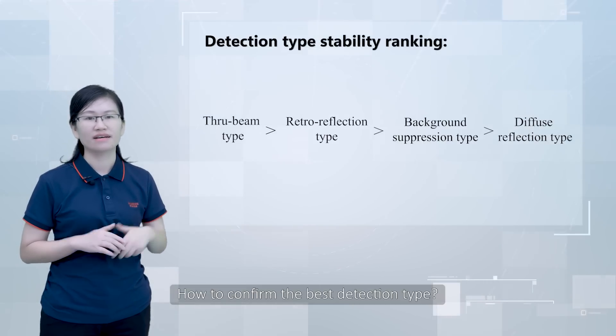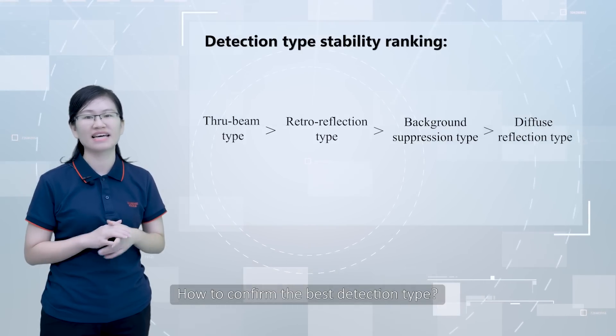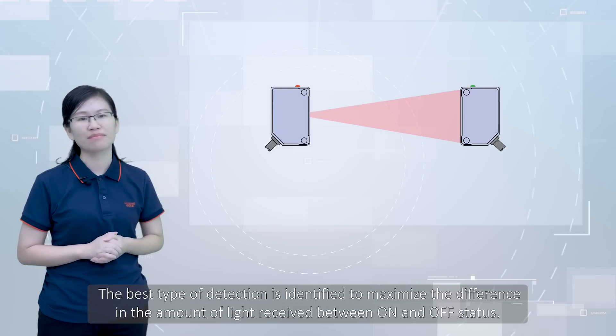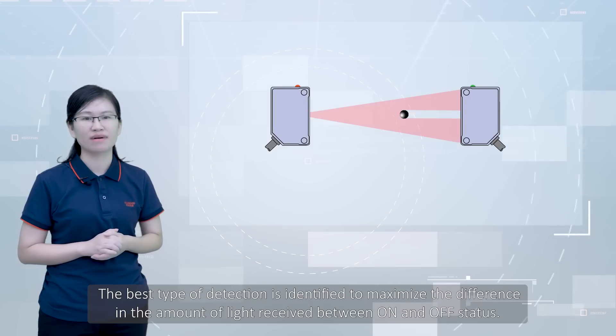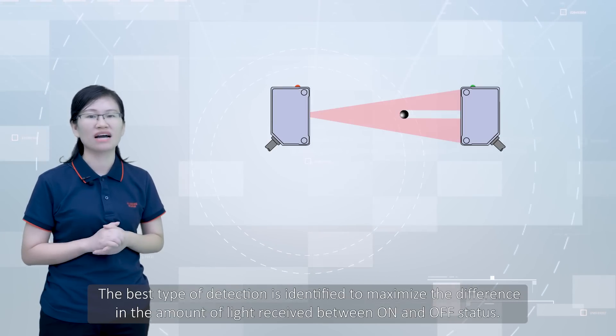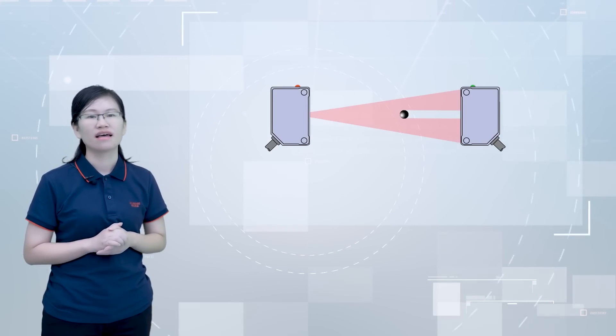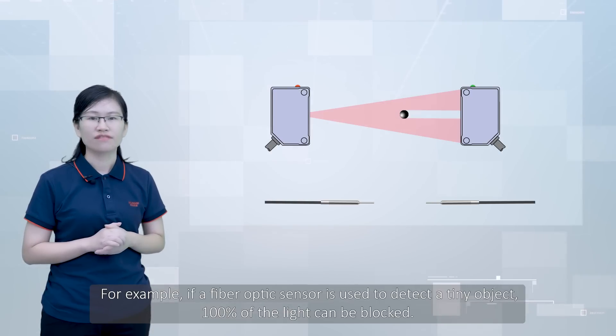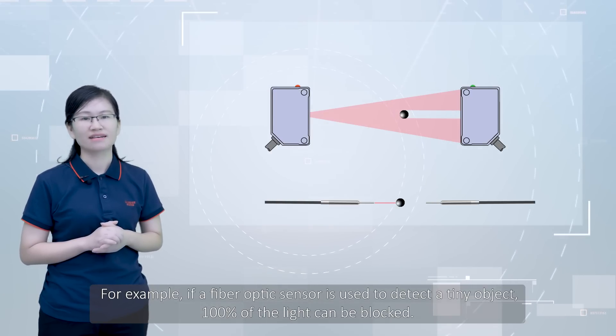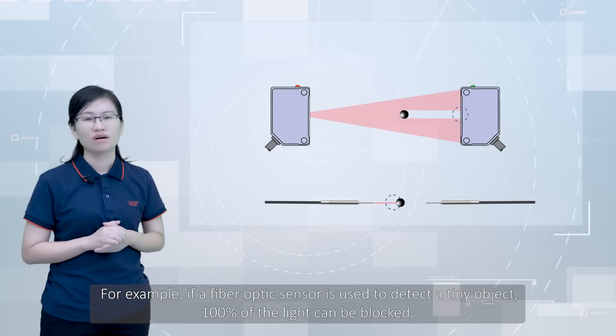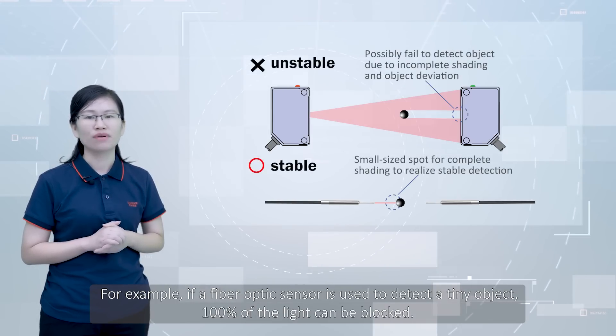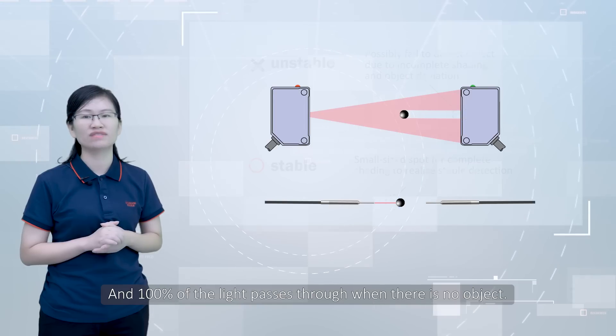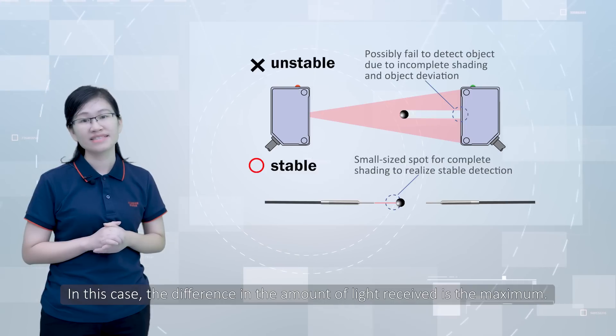How to confirm the best detection type? The best type of detection is identified to maximize the difference in the amount of light received between on and off status. For example, if a fiber optic sensor is used to detect a tiny object, 100% of the light can be blocked and 100% of the light passes through when there is no object. In this case, the difference in the amount of light received is the maximum.